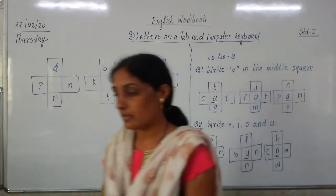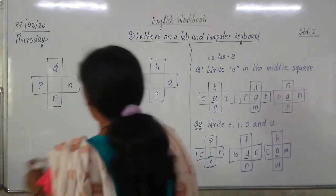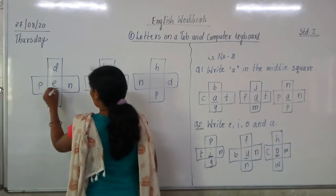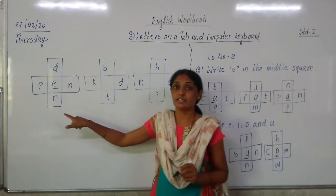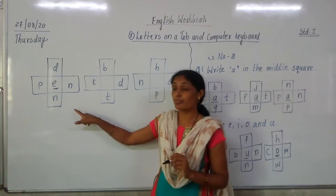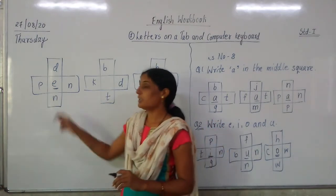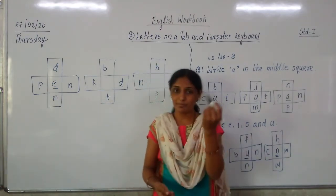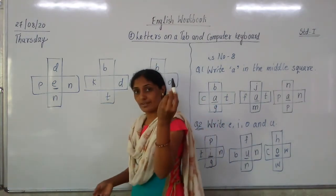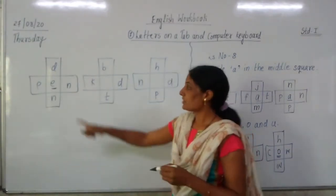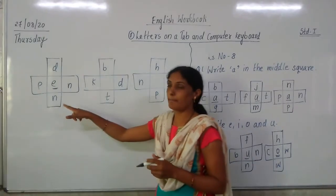The letter E will be perfect for the sixth box. D-E-N is the house of a lion — I have already discussed this with you. And D-E-N and P-E-N — a pen is what we write with on a book. So D-E-N and P-E-N.